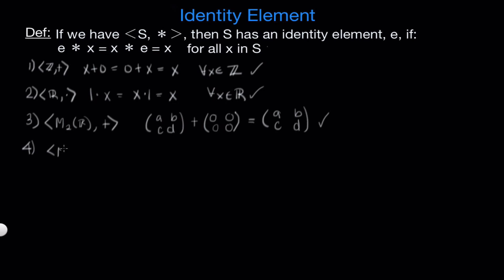Now what about if we have this same set but this time we do multiplication? So we need A, B, C, D. We need this to be multiplied by some matrix and have it output still A, B, C, D.